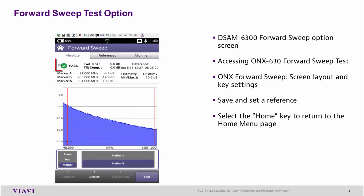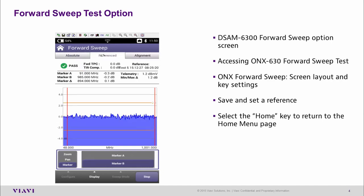We can also see that this test has passed, and the reason it's passed is because it's comparing the current results to what we gave it as a reference. If you go to the reference tab, here are the live results relative to what our reference was, and here we can see a plus 2.5 dB trigger point for a failure and a minus 2.5 dB trigger point for a failure.